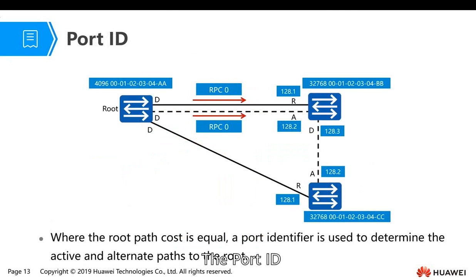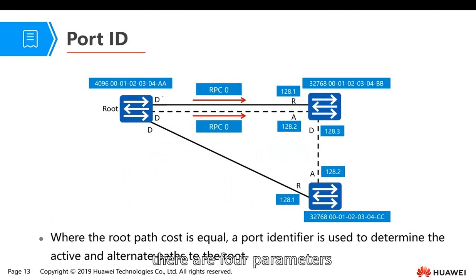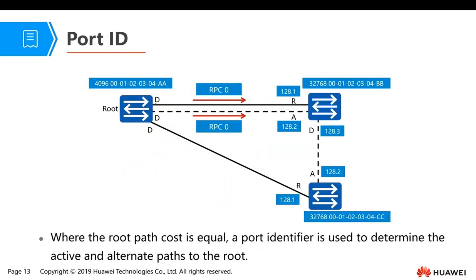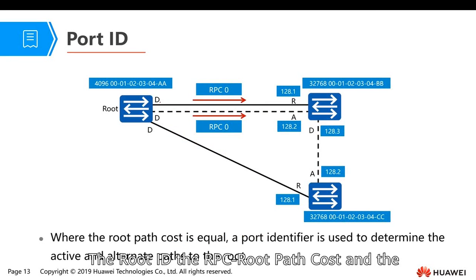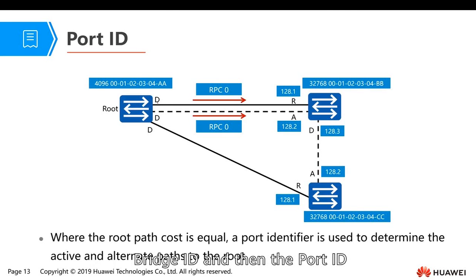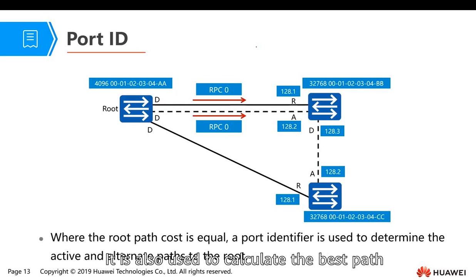The port ID — as we know, in the BPDU there are four parameters. The last one is the port ID: the root ID, the RPC (root path cost), the bridge ID, and then the port ID. The port ID is used to calculate the best path.